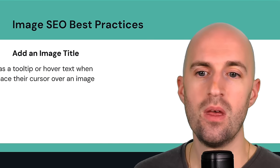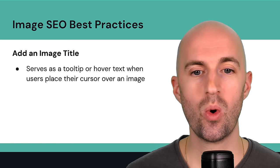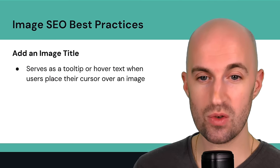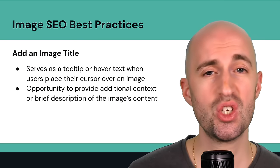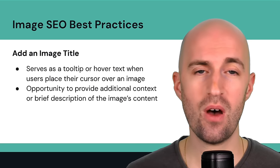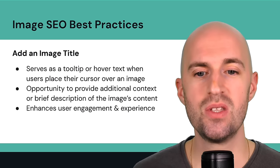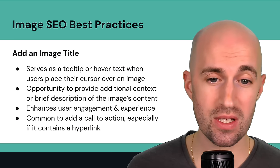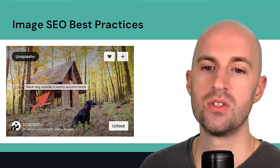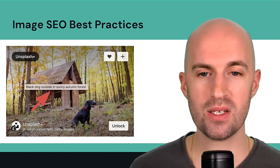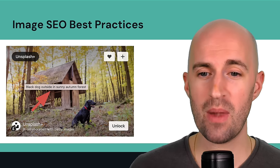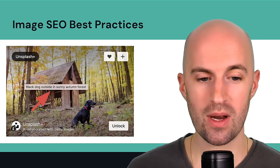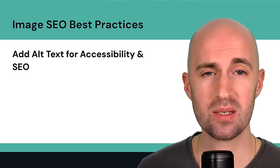Add an image title. An image title serves as a tooltip or hover text when users place the cursor over an image — you've probably seen this. It's an opportunity to provide additional context or a brief description of the image's content. It also enhances user engagement. It's common to add a call to action here, especially if the image has a hyperlink. For example, hovering over an image on Unsplash shows 'black dog outside in sunny autumn forest' — that's the image title tooltip.